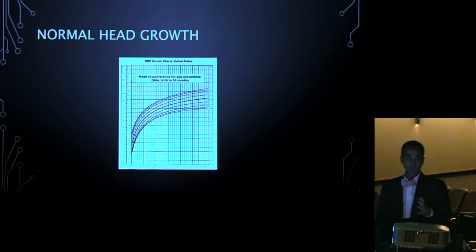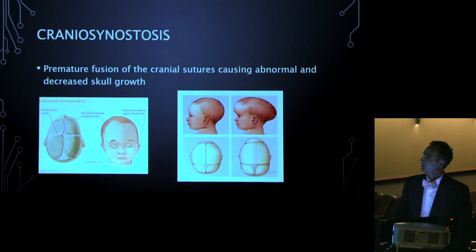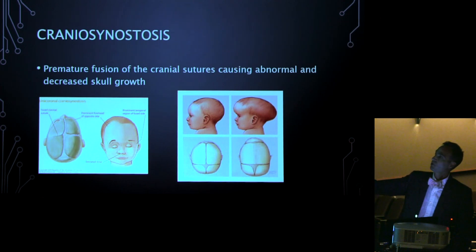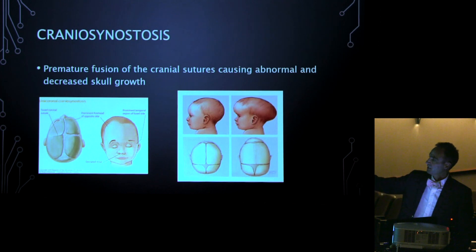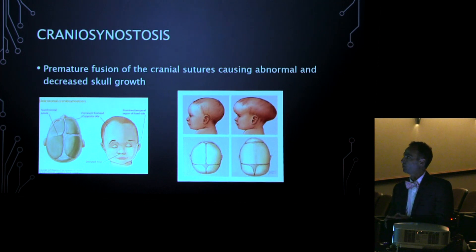If all the sutures are open, you get symmetric head growth. But if a suture is fused — for example, if the coronal suture is fused — you get abnormal shortening of the skull on that side, with the anterior-posterior dimension shorter and the skull lower on that side. If the sagittal suture is fused, the skull can't grow wide, so it grows long and skinny. You get these characteristic skull shape abnormalities, but they're also associated with a skull volume that's smaller than normal.